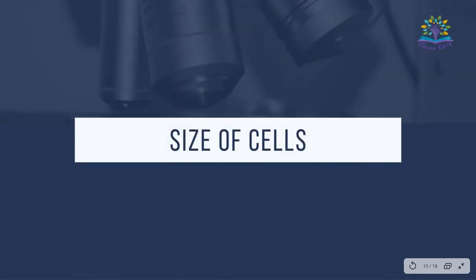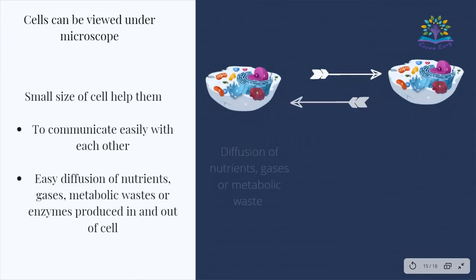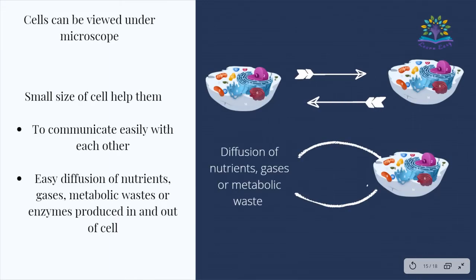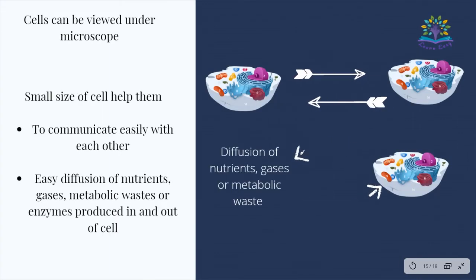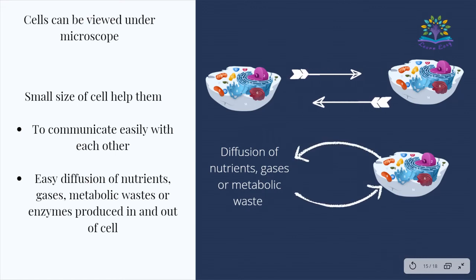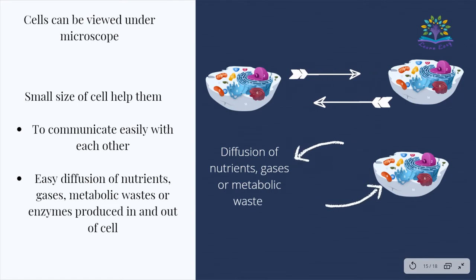Cells are very small and can be viewed only under a microscope. The small size of a cell helps them to communicate easily with each other and allows easy diffusion of nutrients, gases, metabolic wastes, and enzymes in and out of the cell.